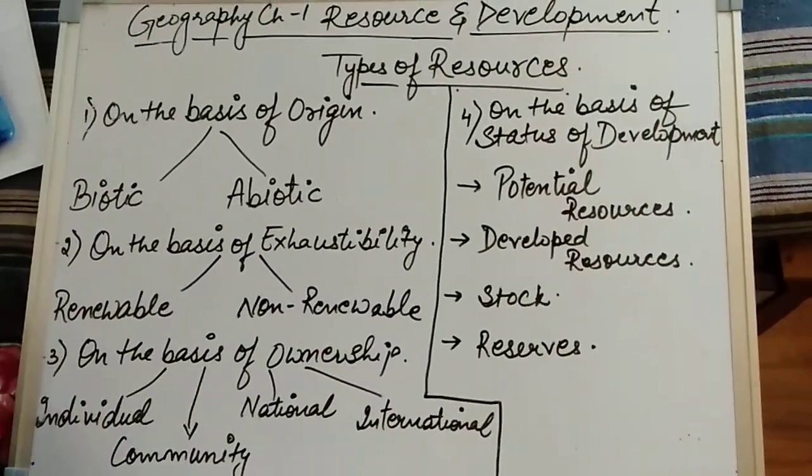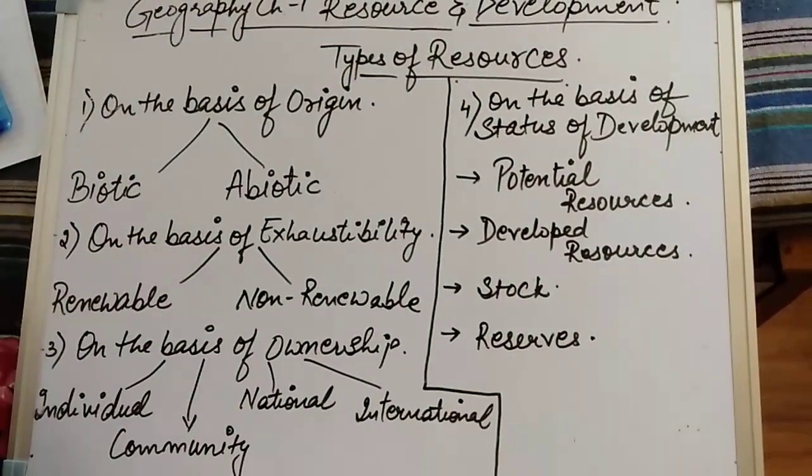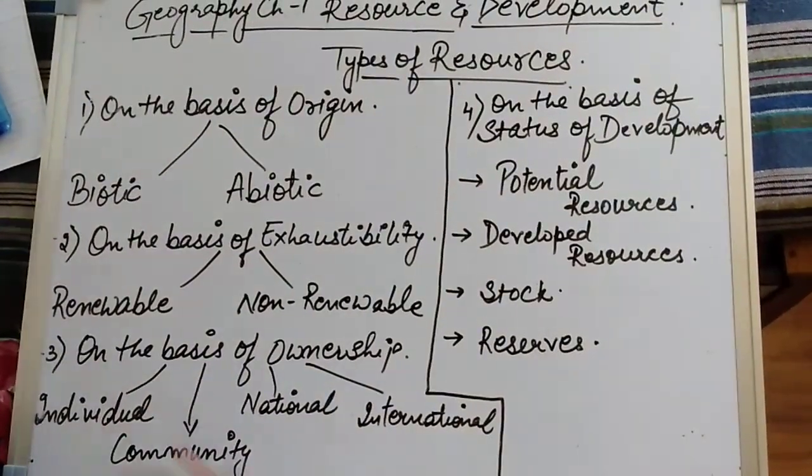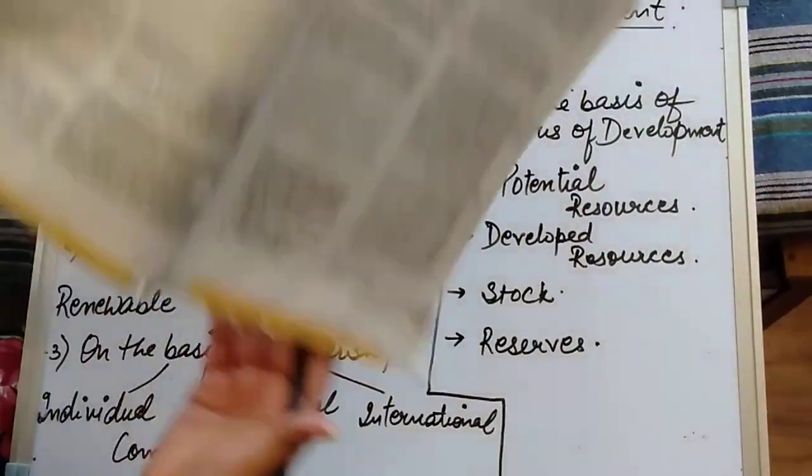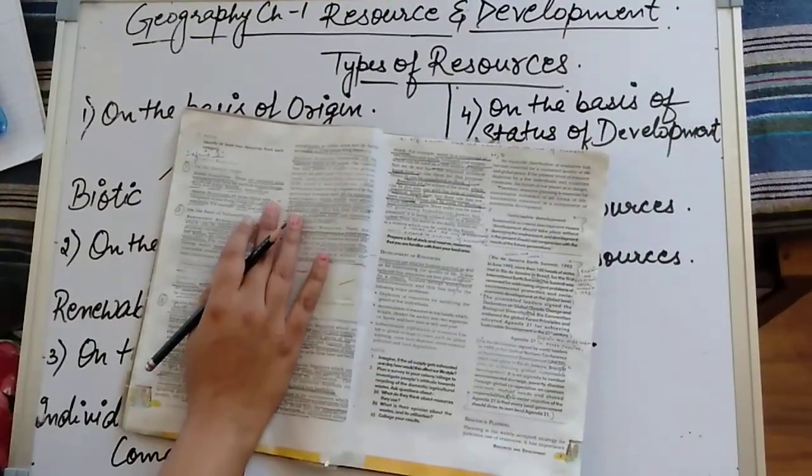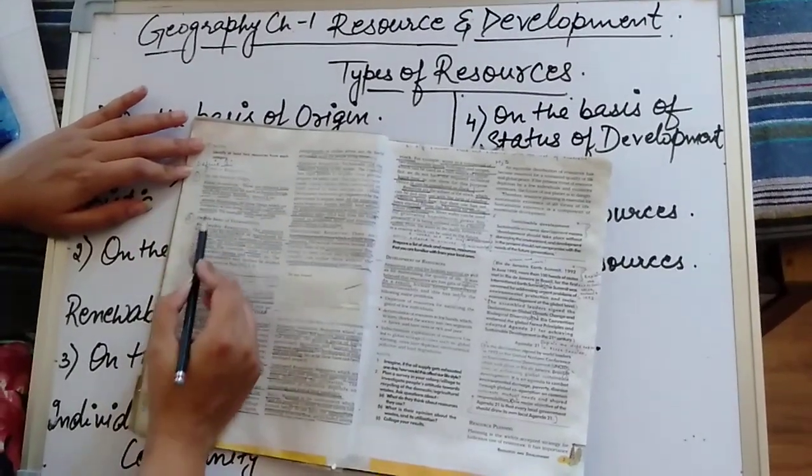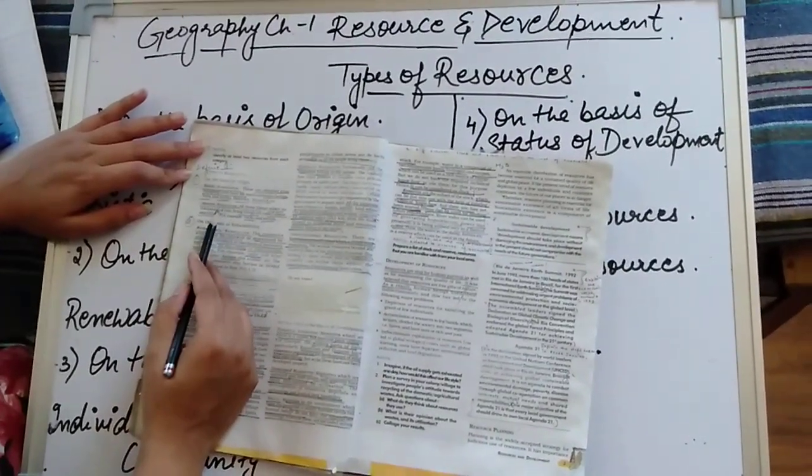Today, we are going to learn the types of resources in an elaborated manner. As we can see in the book, the resources can be classified on the basis of origin, i.e. biotic resource and abiotic resources.